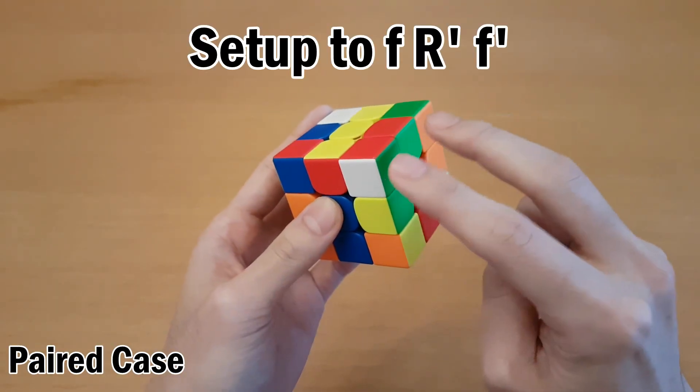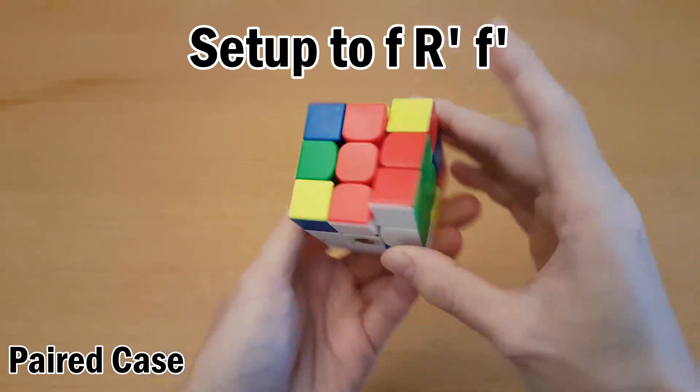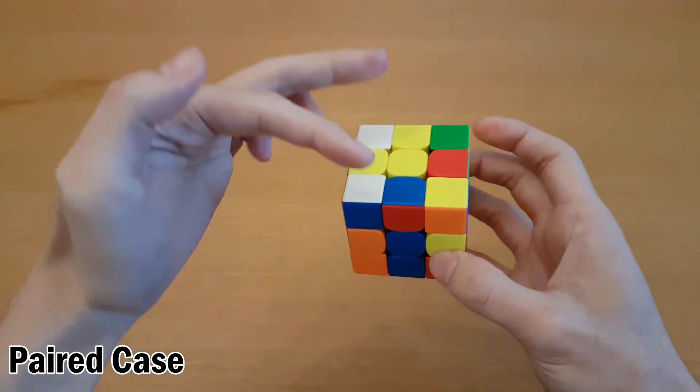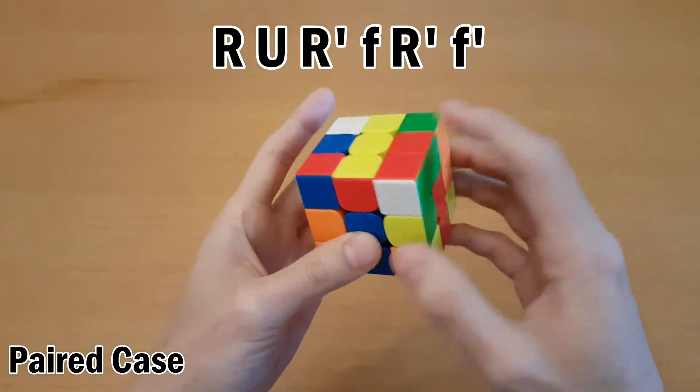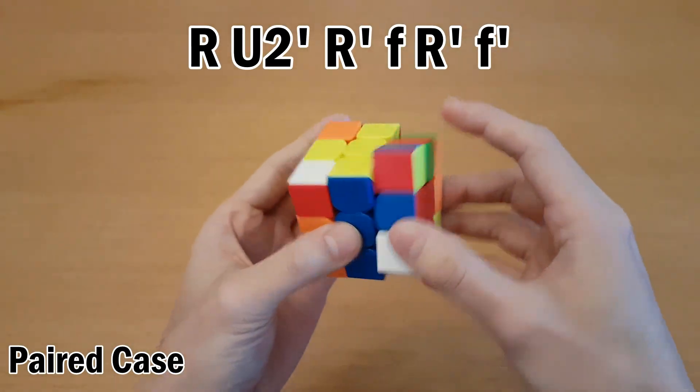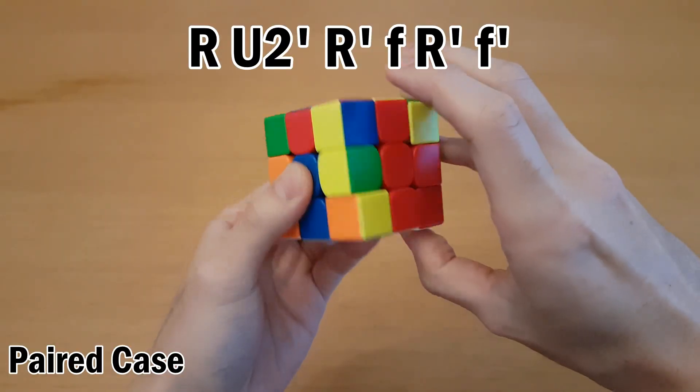The second general application is where you can set up into this, and insert this way. For example, if the corner is white on top in either of these two spots, then in this case you can set it up here and insert. Or if it's here, you can also set it up on top and insert.